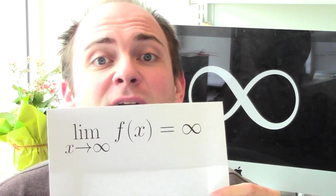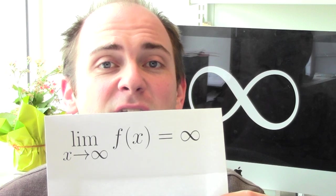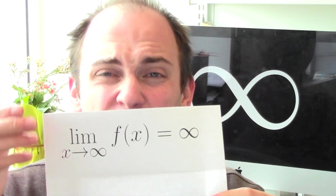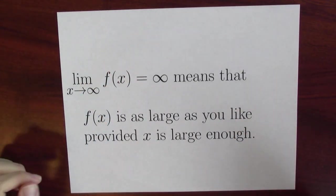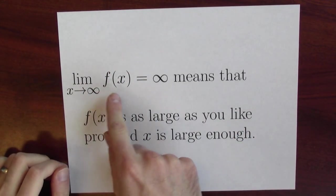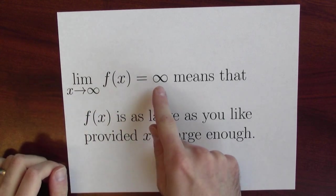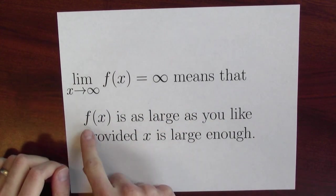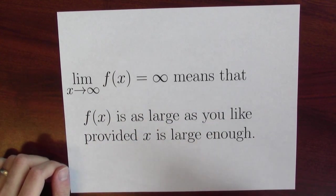What if someone had asked us to cook up a definition of the limit of f of x equals infinity as x goes to infinity? Could we come up with a definition for this? Yeah, absolutely we can. Here we go. The limit of f of x as x approaches infinity equals infinity means that I can make f of x as large as you want it to be, provided x is large enough.